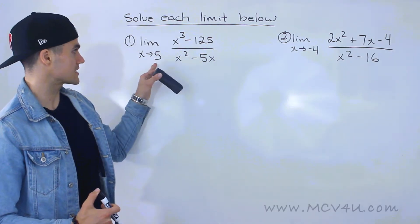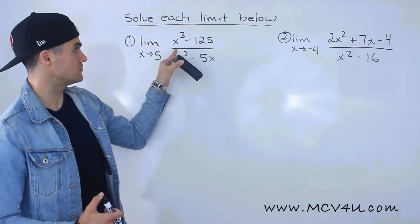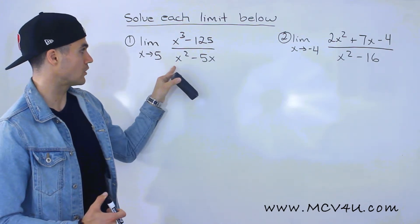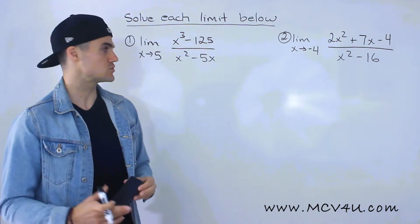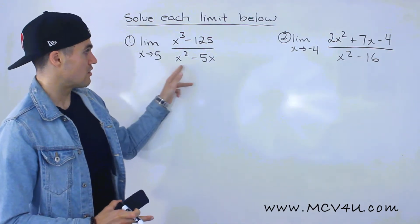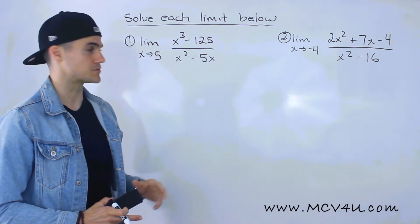So number one, we got the limit as x approaches 5 of x cubed minus 125 all over x squared minus 5x. Notice we can't make a direct substitution, because if we do, that denominator is going to equal 0.